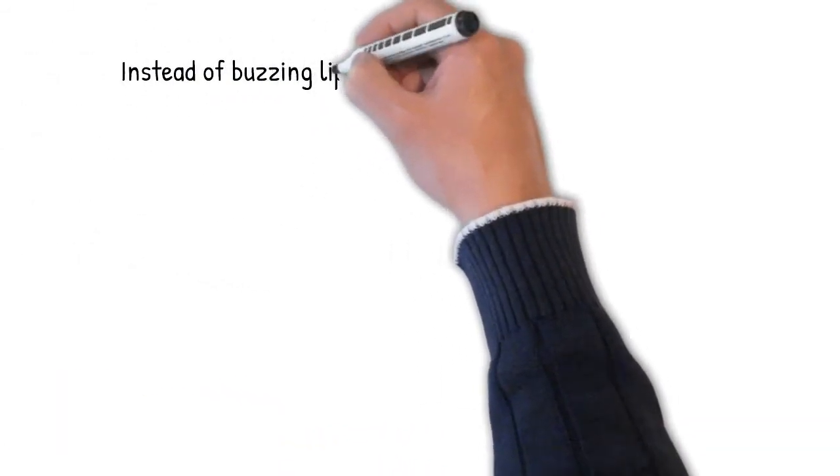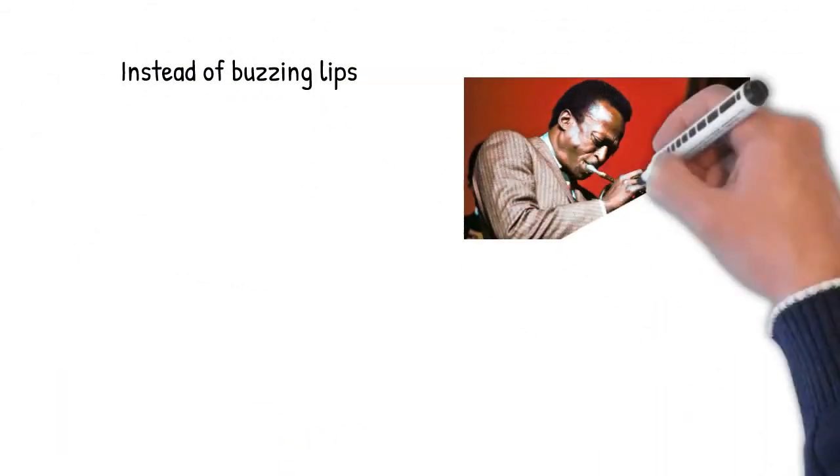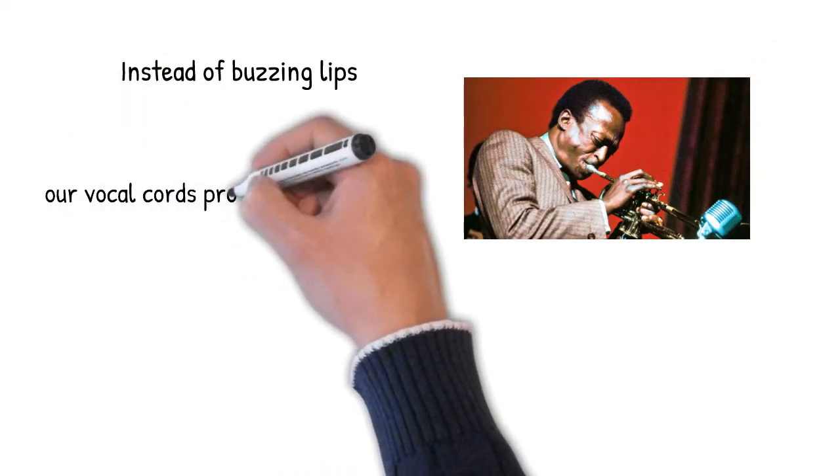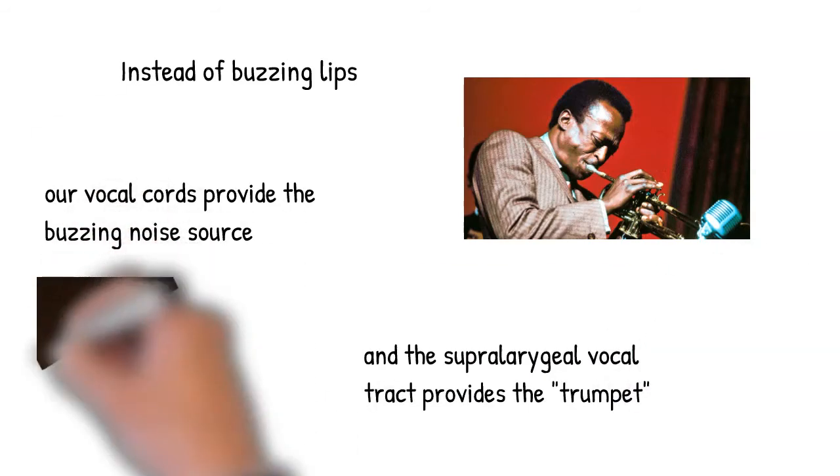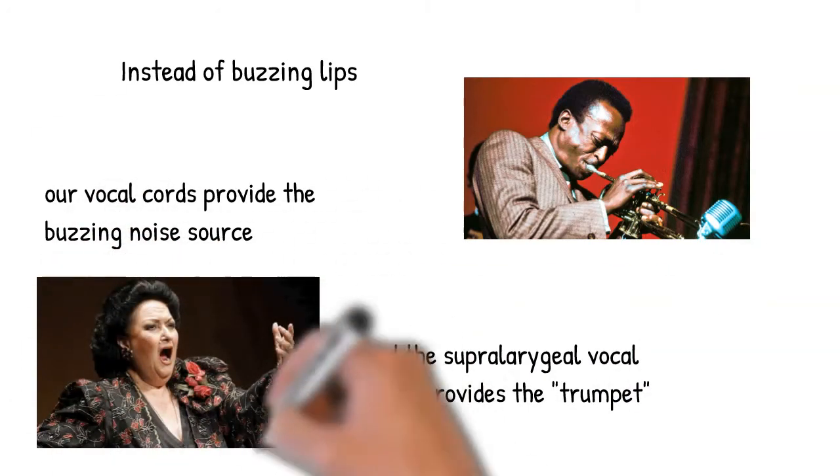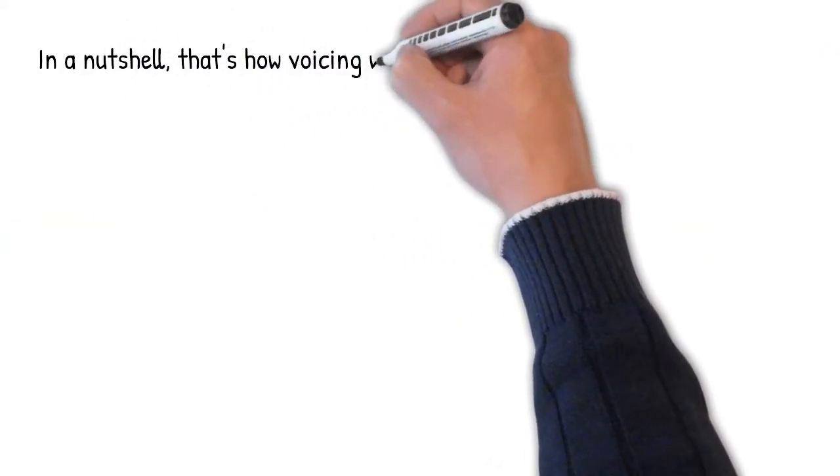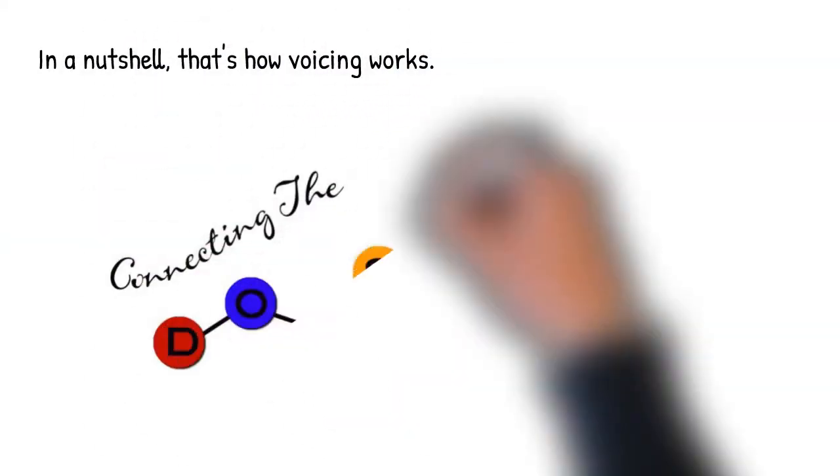So instead of buzzing lips, our vocal cords provide the buzzing noise source for voicing, and the supralaryngeal vocal tract provides, following up on the analogy, the trumpet. In a nutshell, that's the basics of how voicing works.